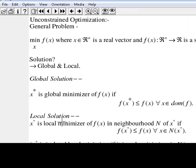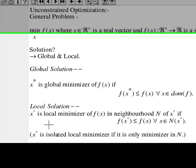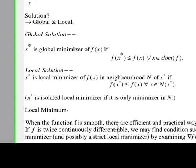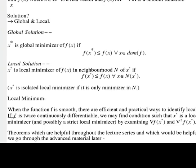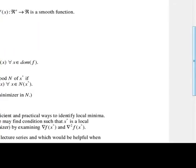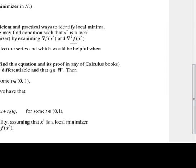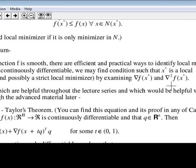The other category is local solution. We are always interested in finding the local minimizer of our objective function because global minimizer is a really hard problem, and most of the literature focuses only on the problem of local minimization. When f(x) is a smooth function, there are efficient practical ways to identify a local minima. If f(x*) is differentiable, we may find conditions over x* such that x* is a local minimizer, and possibly a strict local minimizer, by examining the gradient of f(x) or Hessian of f(x) near or at the point x*.